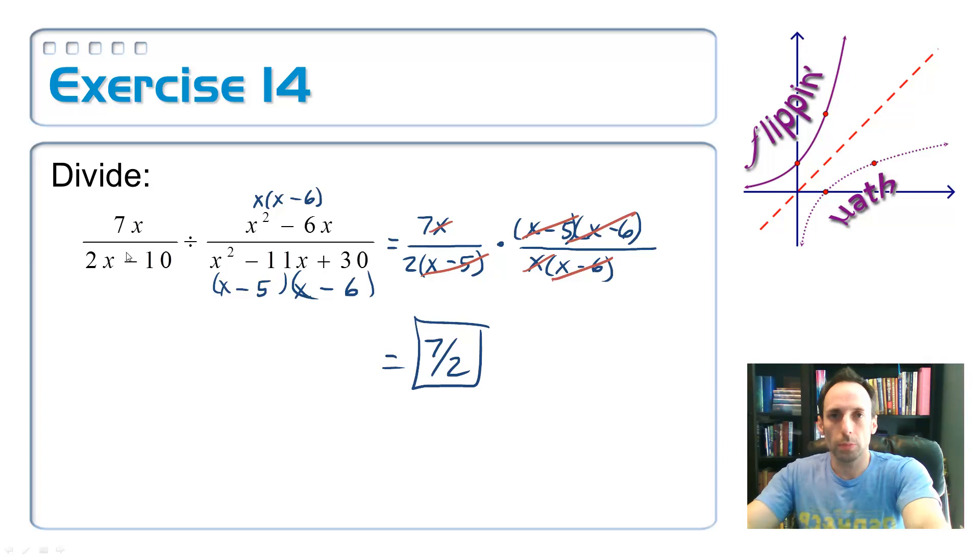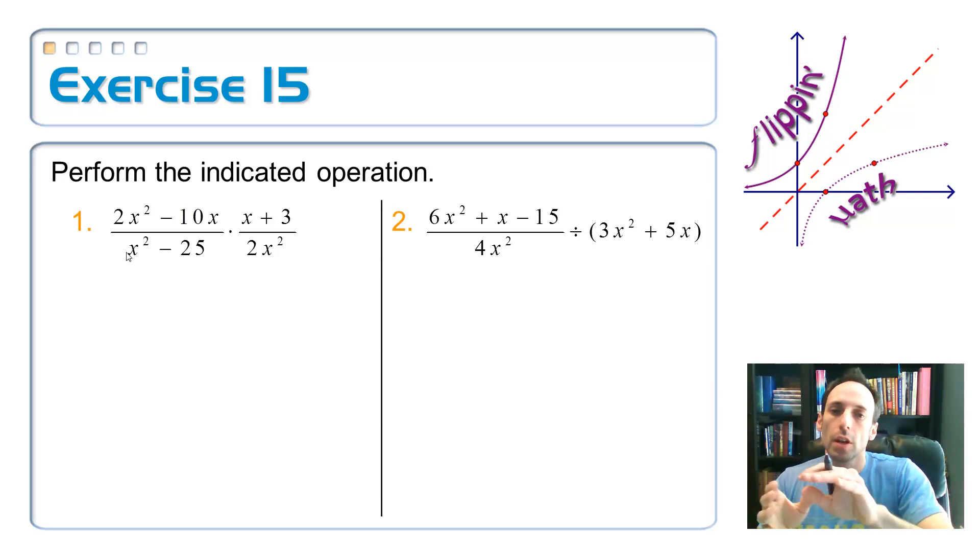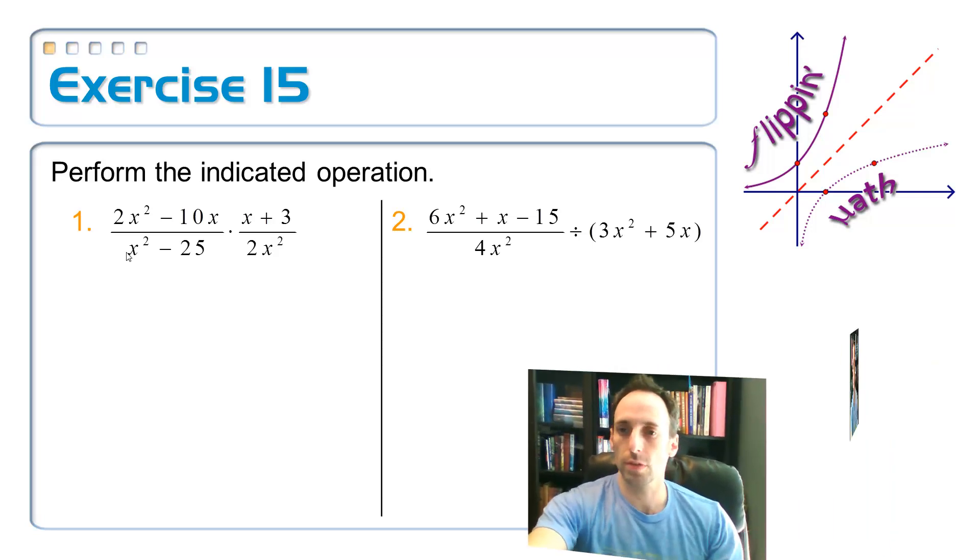Multiplying, multiply straight across. Divide, flip the second one, multiply straight across. Factor and cancel out stuff before you multiply straight across and make it a lot easier on yourself. So here are two of them for you to practice on your own. This is the first time this whole entire lesson where you've got to try something on your own. I bet you're pretty excited about it. So go ahead and pause the video. Come back and check to see if your answers are right.